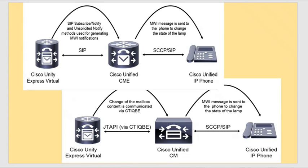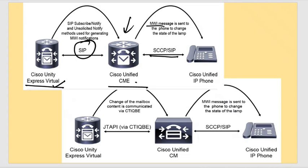The Message Waiting Indicator (MWI) is sent from CME to the IP phone. Once you have a voicemail in Unity Express, your call manager is responsible for sending that notification to the user, since users are registered on the call manager. To send that notification, SCCP or SIP is used. Between Unity Express and the call manager, the protocol running is SIP, and from CUCM or CME to the IP phone, it is SIP or SCCP.